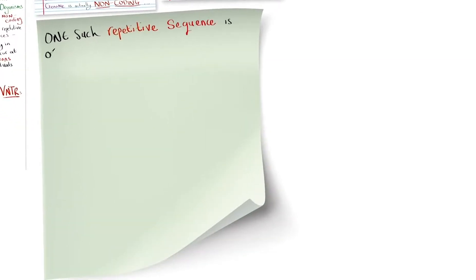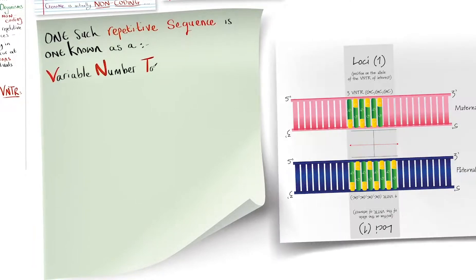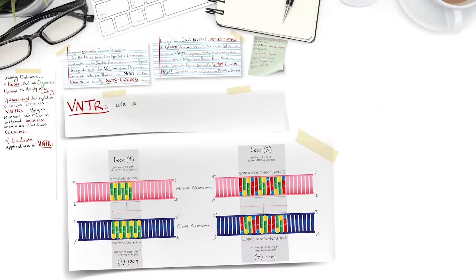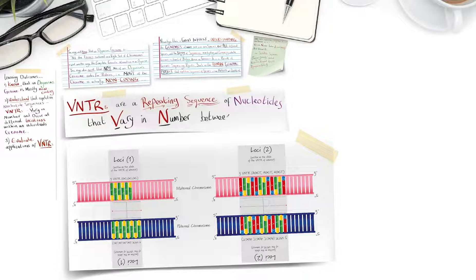One such repetitive sequence is known as a Variable Number Tandem Repeat, VNTR, which are also called mini-satellite sequences, and sometimes are generally referred to as Restriction Fragment Length Polymorphisms. VNTRs are a repeating sequence of nucleotides that vary in number between individuals.